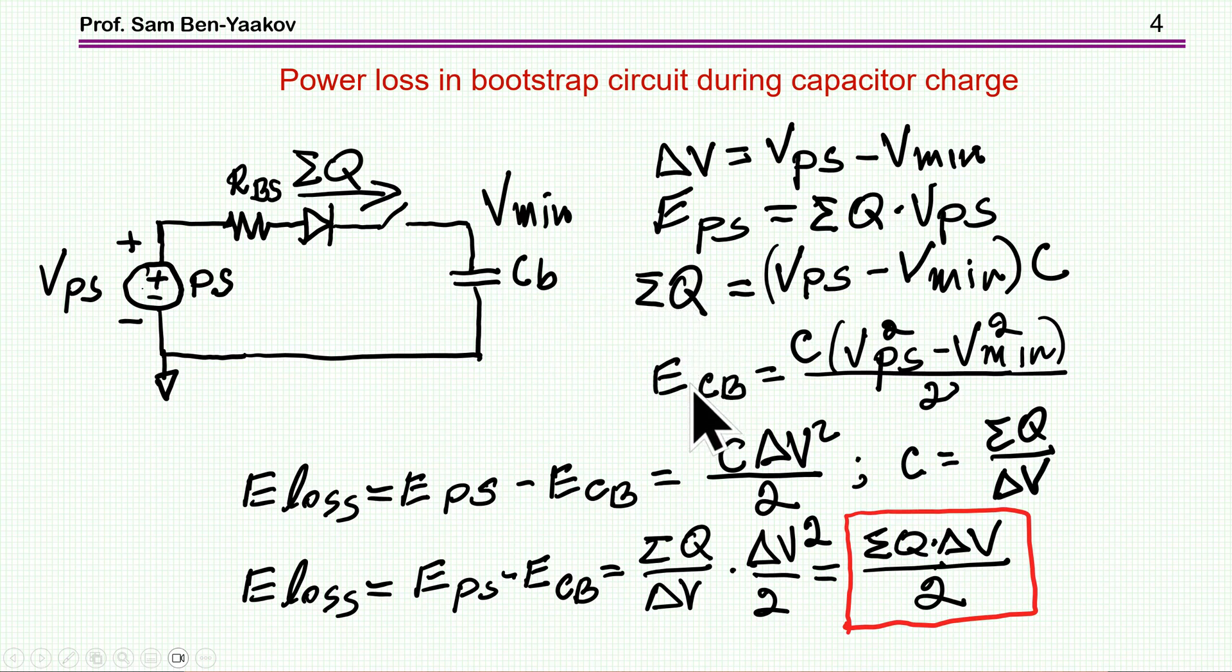The energy that was delivered to this capacitor is calculated from the final energy, which is C*V_PS^2/2, minus the initial energy, which is C*V_minimum^2/2. From this equation, I can get the difference between the power delivered by the source and the power that the capacitor actually got through this process. This is the energy of the source, this is the energy delivered to the capacitor, and it turns out from this equation you get this expression.